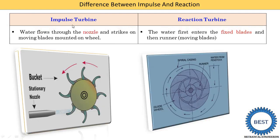The fourth point: in an impulse turbine, water flows through the nozzles and strikes the moving blades mounted on the wheel. Water comes from the reservoir to the penstock, and at the end of the penstock we install the nozzle. From the nozzle, water directly strikes the runner or bucket of the blade. In a reaction turbine, water first enters the fixed blade and then the runners. Water from the penstock enters the casing, goes into the guide wheel (the fixed blade), and then proceeds into the runner.